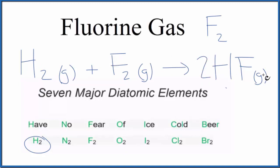So the key idea is when you hear fluorine gas, you're thinking F2. Likewise, there are other major diatomic elements. And this little thing here helps you remember, have no fear of ice cold beer.